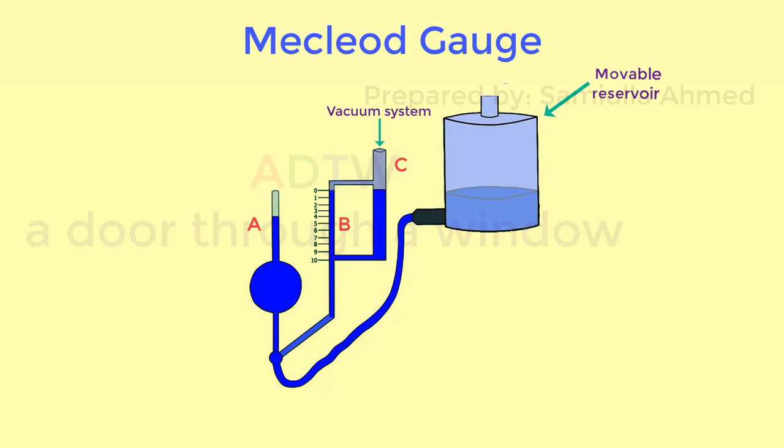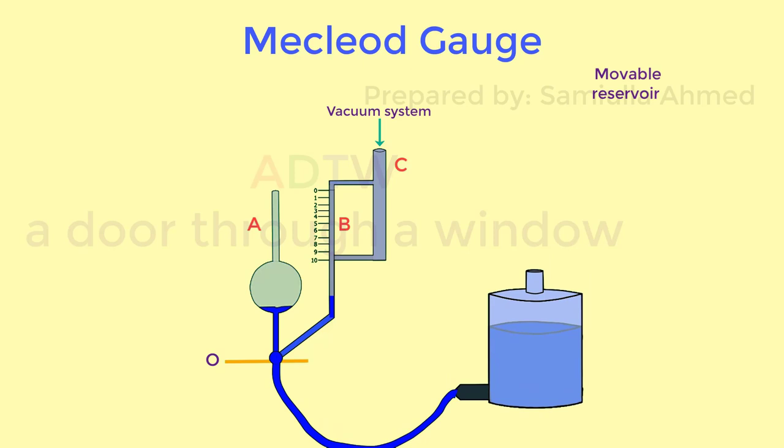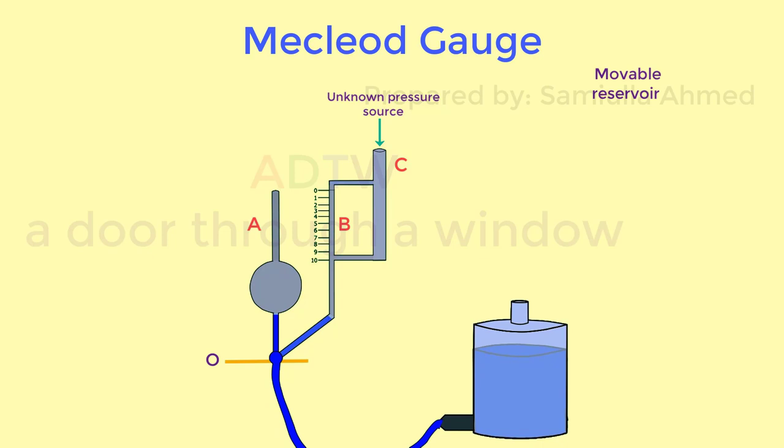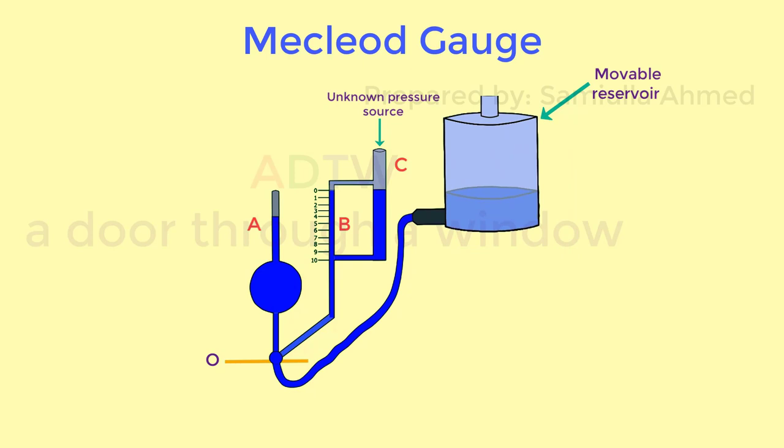Initially the movable reservoir is lowered to allow the mercury column to fall below the opening level O. In this position the capillary and limbs are connected to the unknown pressure source. The movable reservoir is then raised such that the mercury fills up the bulb. The mercury level in capillary tube A also rises and compresses the trapped gas in the capillary tube according to Boyle's law.